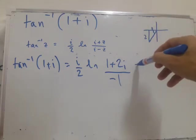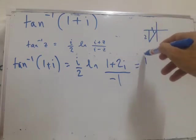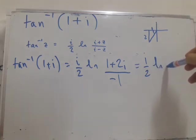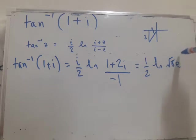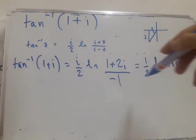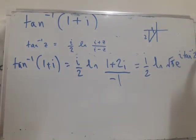So we have i over 2 times log of √5 times e to the i inverse tan of 2. Then I need to also add plus 2πni.